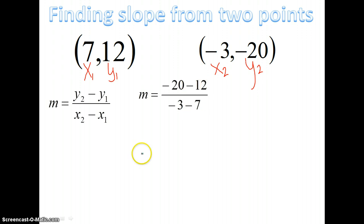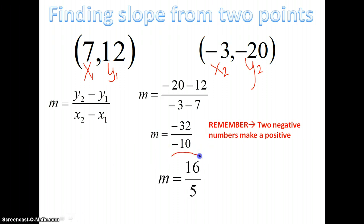And then I'm just going to subtract them. Negative 20 minus 12 is negative 32. Negative 3 minus 7 is negative 10. Remember, whenever you have two negative numbers divided by each other, they make a positive. So, negative divided by negative is a positive. And then 32 divided by 10, well, you find what number goes into both of those, which is 2. 2 goes into 32, 16 times. And 2 goes into 10, 5 times. So, my slope in this example is 16 divided by 5.